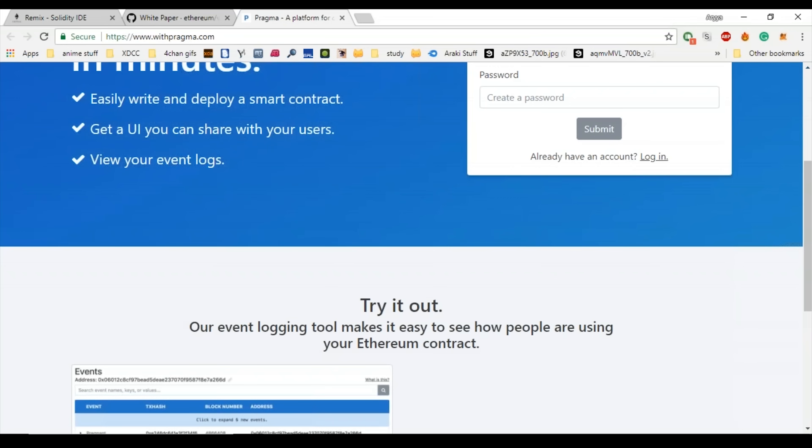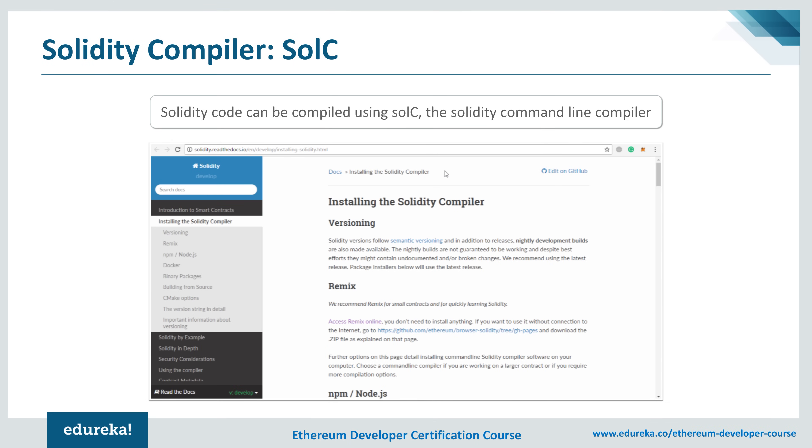You can also use code editors for writing and editing Solidity code files. Visual Studio Code is a source code editor developed by Microsoft. Another cool editor is Atom, which is easily available for macOS, Linux, and Windows. Now that we're done discussing text editors, it's time to look at the compiler used for compiling Solidity.